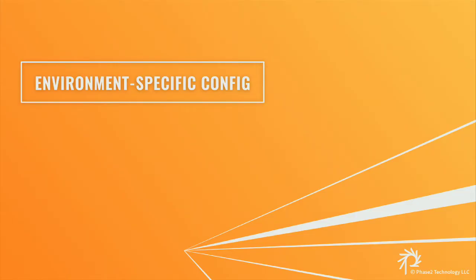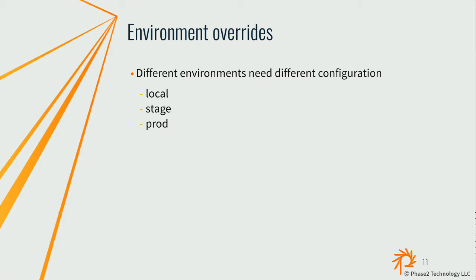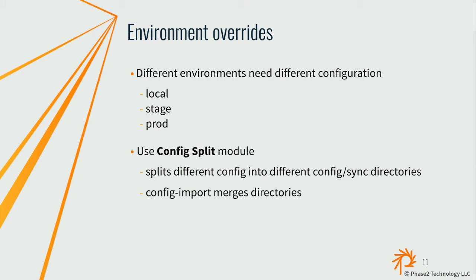Now let's talk about environment-specific config — probably the main reason we're here. This comes up whenever you're doing a large Drupal site with multiple environments: local dev, stage, and prod. You've got different configuration — you don't want to send emails to all your users from dev, you don't want your Google Analytics key polluting the client's data. There's a great module called Config Split, written by Fabian Bercher, that lets you split config into different sync directories and ties into the normal import/export mechanism.